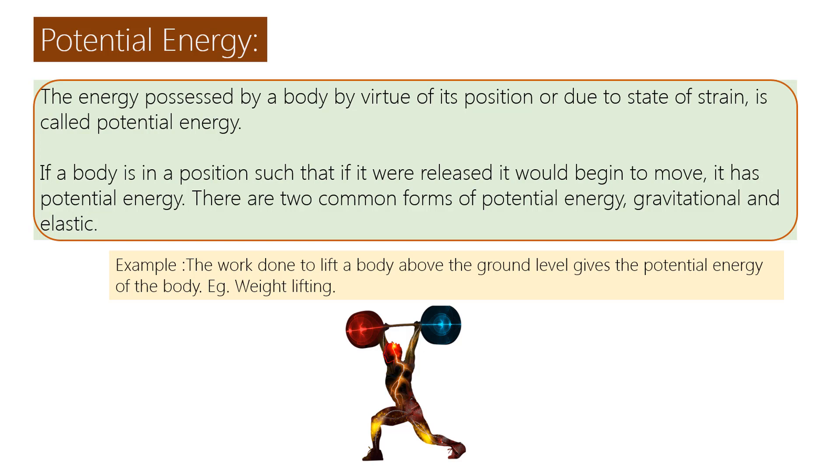There are two common forms of potential energy: gravitational and elastic. Example: The work done to lift a body above the ground level gives the potential energy of the body. Example: Weight lifting.